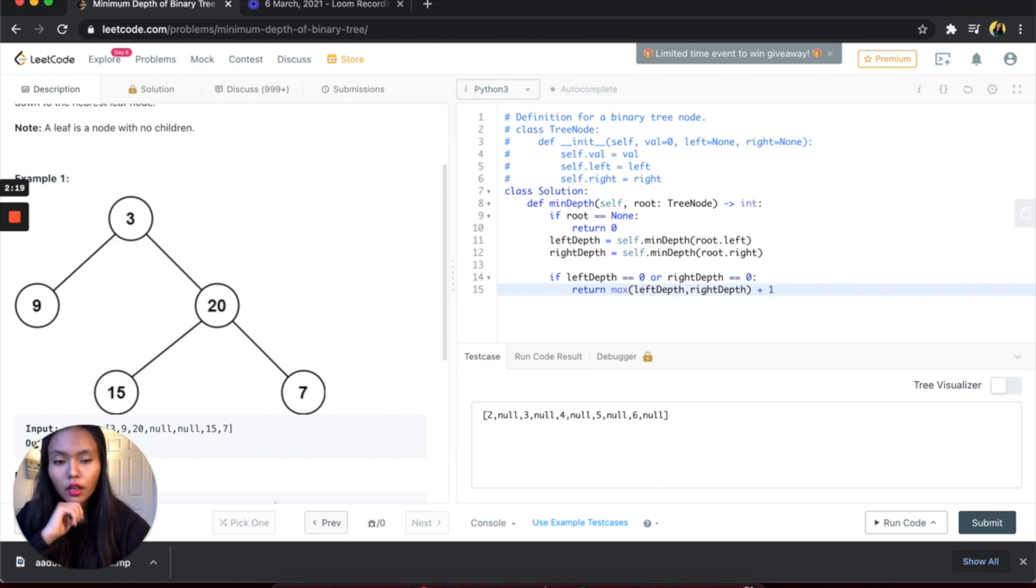And then else, what we want to do is return the minimum of the left depth and... this makes sense because we're looking for the minimum depth. We'll return the minimum of the left depth and right depth, and we are going to add one. Yeah, so this looks good. Let me go ahead and run this.